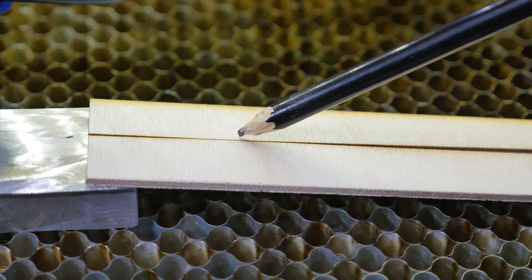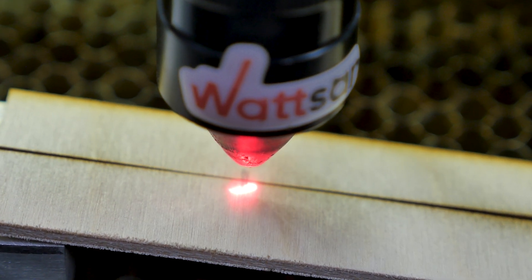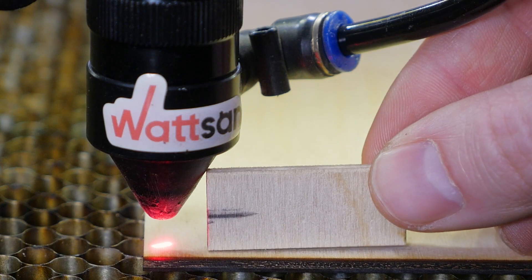There should appear an irregularly wide mark. Mark the center of the thinnest part with a pencil and place the laser head over the mark. The distance from the workpiece to the tip of the nozzle is the correct focal length.